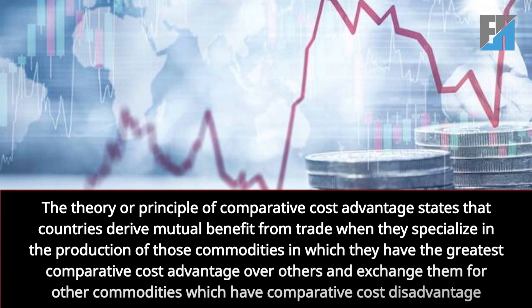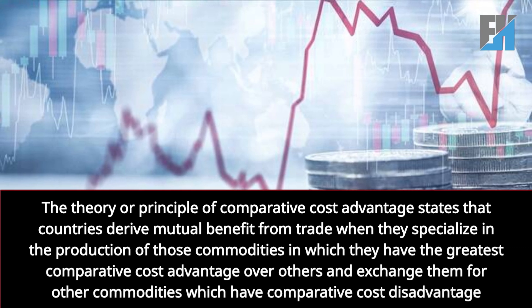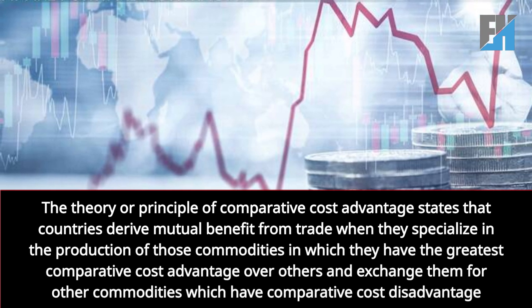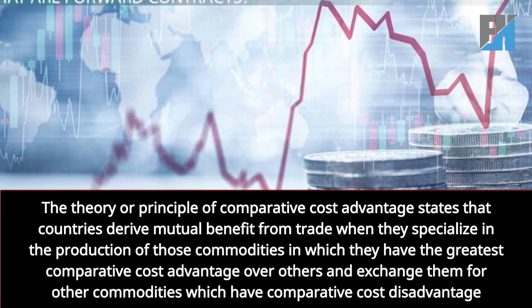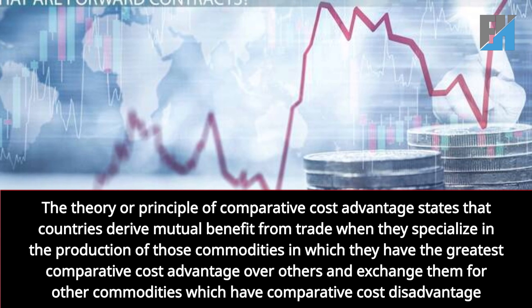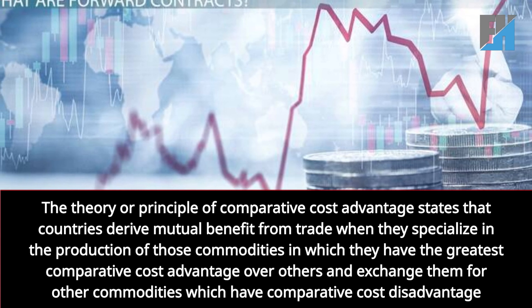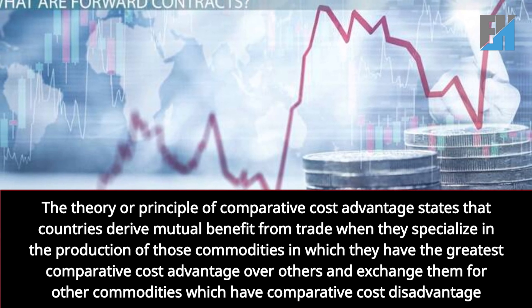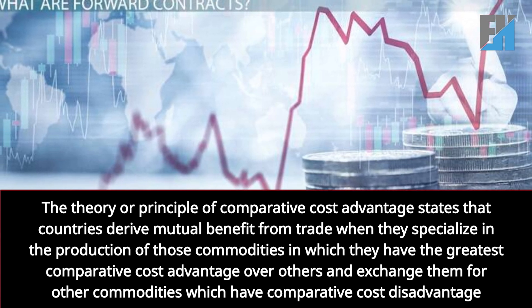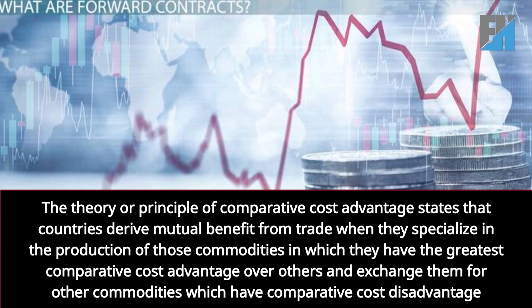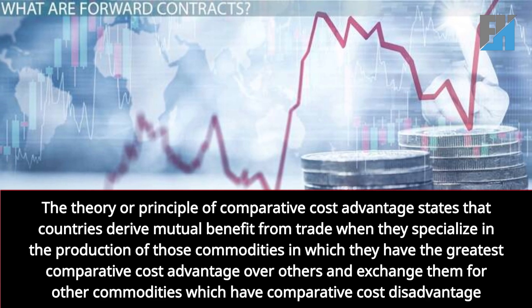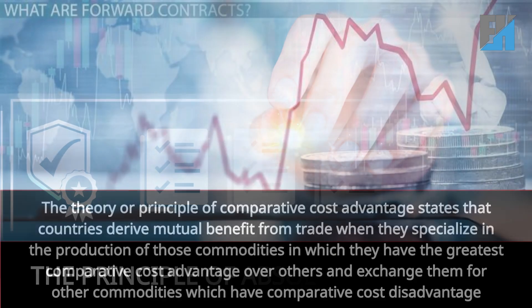The law of comparative cost advantage states that countries derive mutual benefit from trade when they specialize in the production of those commodities in which they have the greatest comparative cost advantage over others, and exchange them for commodities in which they have a comparative cost disadvantage.